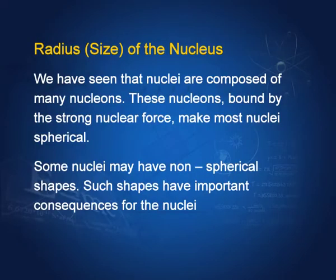What is the radius of the nucleus? We have seen that nuclei are composed of many nucleons. These nucleons, bound by the strong nuclear force, make most nuclei spherical — just like Earth or other planets and stars become spherical because of strong gravitational force. So because of the strong nuclear force, nuclei tend to be spherical. What then is the radius?